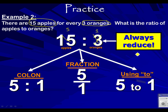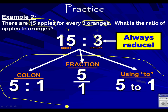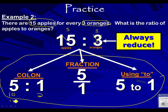So there are your ratios: five apples for every one orange. Here's your fraction, five to one. Here's the colon, and using the word 'to' — five to one. That's how that works. So if you ever encounter a question that says write a ratio three different ways, that's what we're talking about: the colon, the fraction, and using the word 'to.'